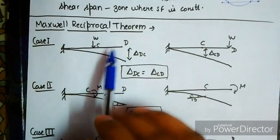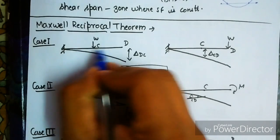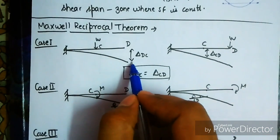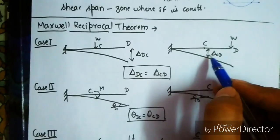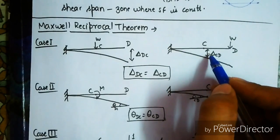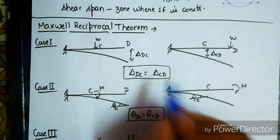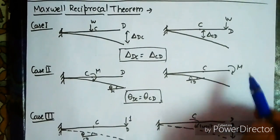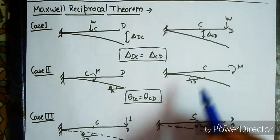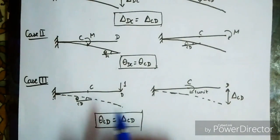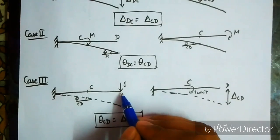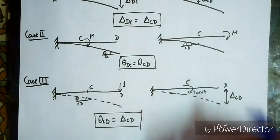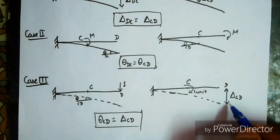Maxwell's reciprocal theorem: for a cantilever beam, the deformation produced at the end due to a load at mid-span equals the deformation at mid-span due to a load at the end. Similarly for moments and rotations: theta values are equal at corresponding points. When a unit load is applied at the end and delta is obtained at mid-span, or a unit moment is applied at the center and theta is obtained at the end, theta-cd equals delta-cd.